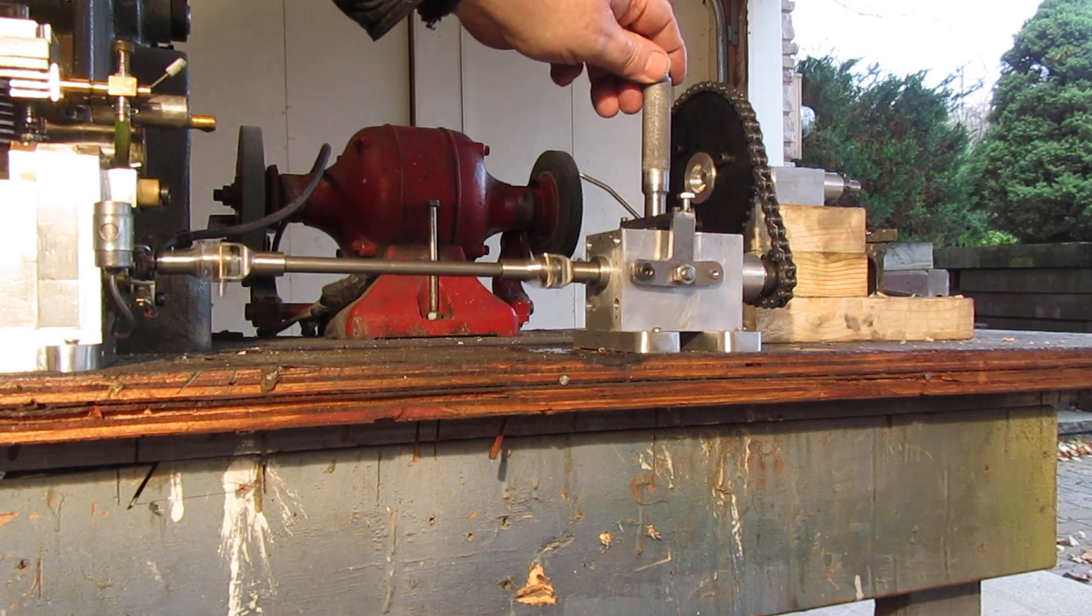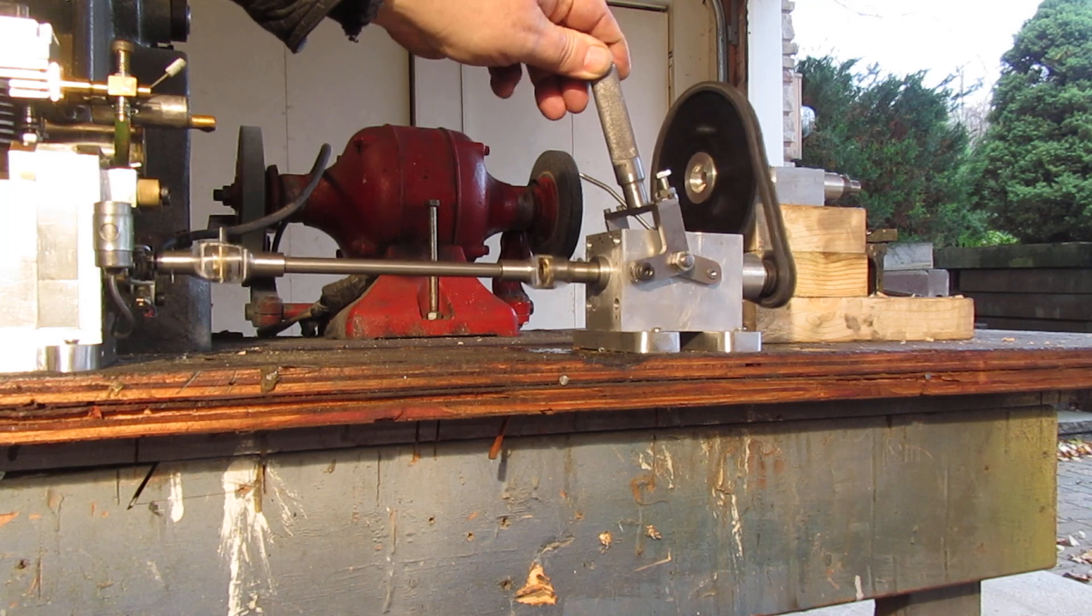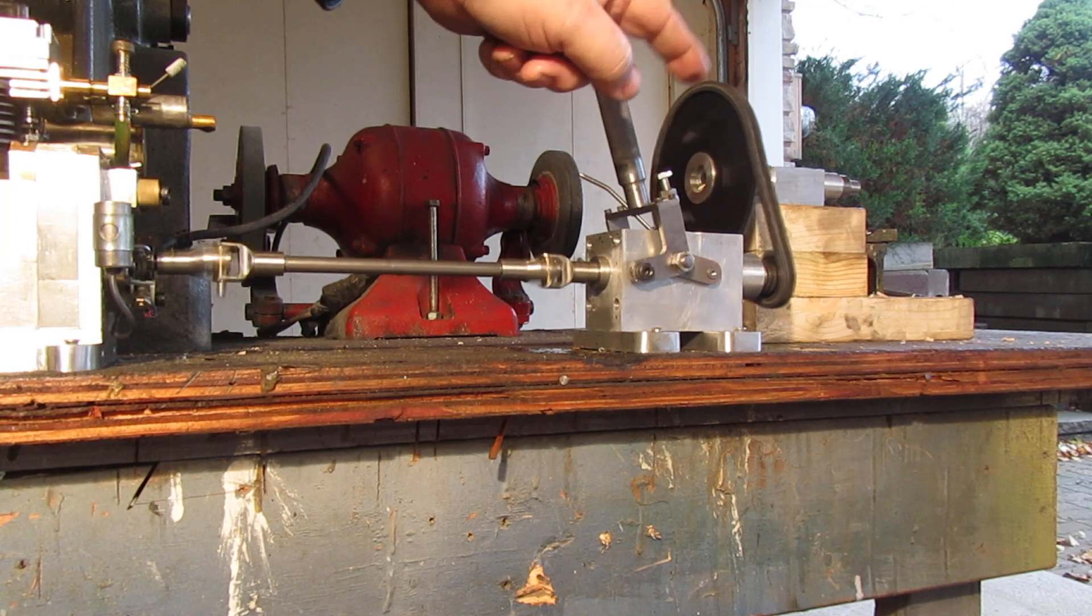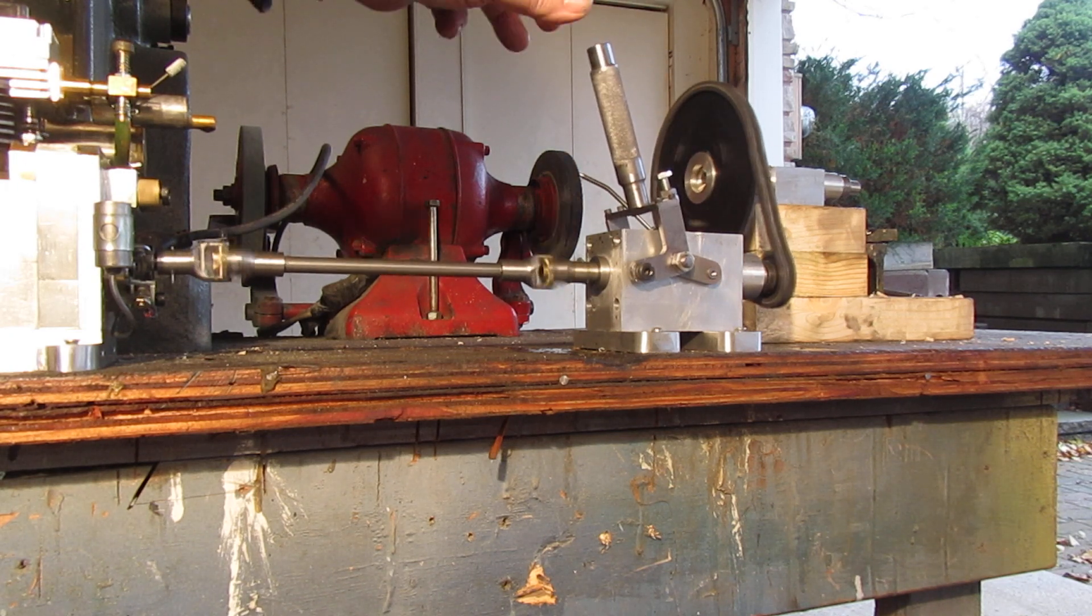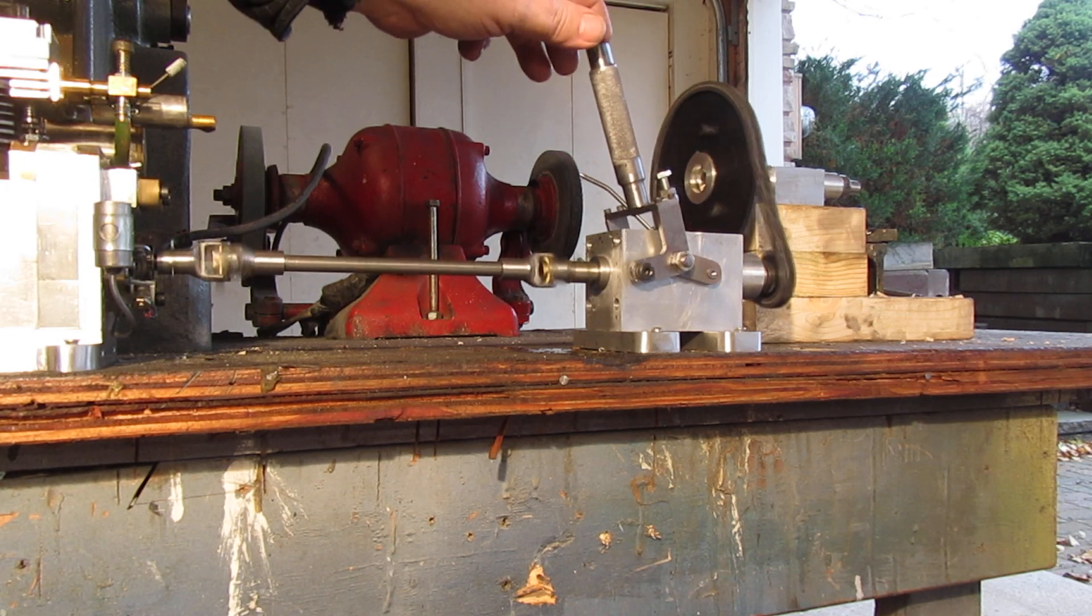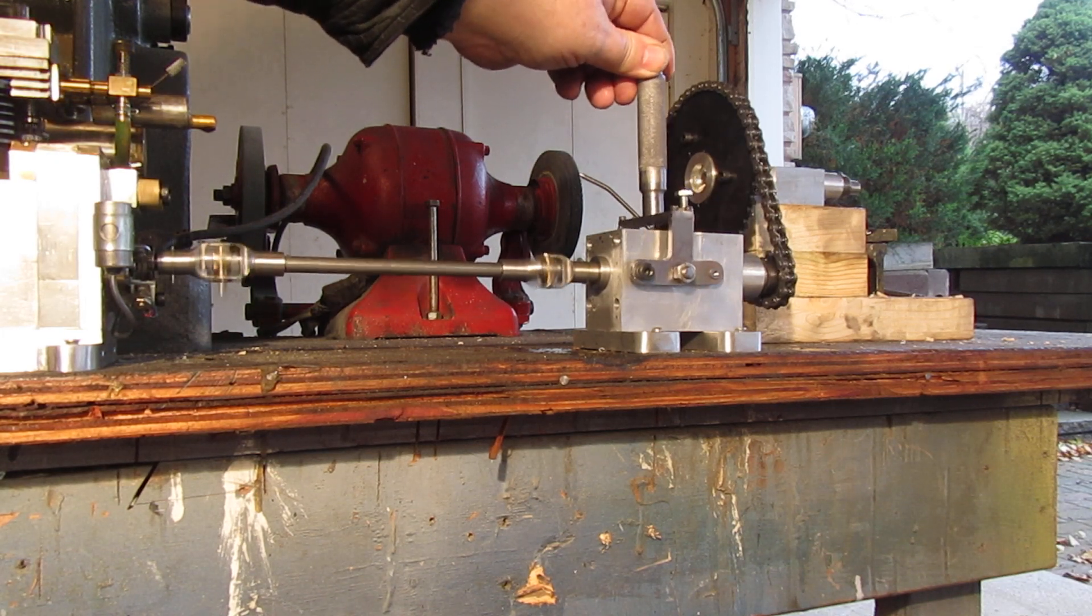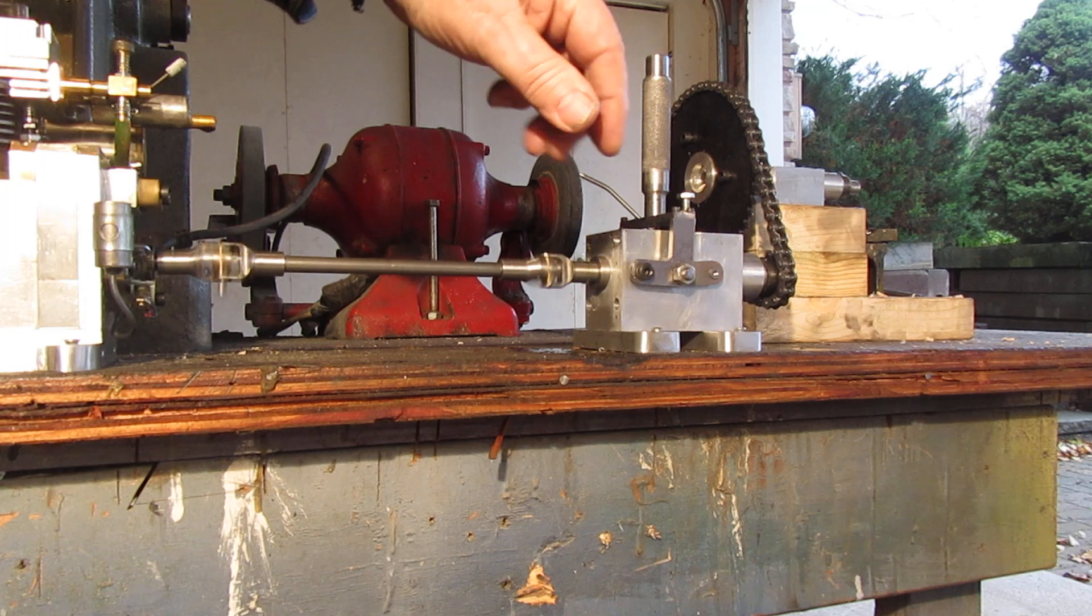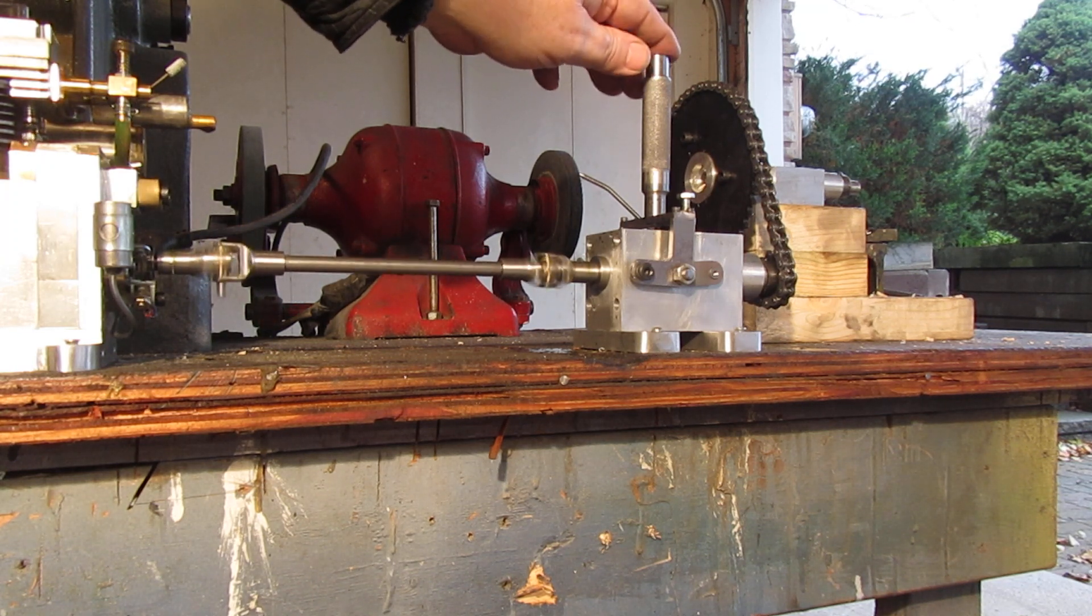Now I'm going to engage the clutch, and you can see that with the clutch engaged, I'm getting power out of the output side to that pair of sprockets. Now I'm going to disengage it again, and as soon as I disengage it, all of the movement on the output end stops.